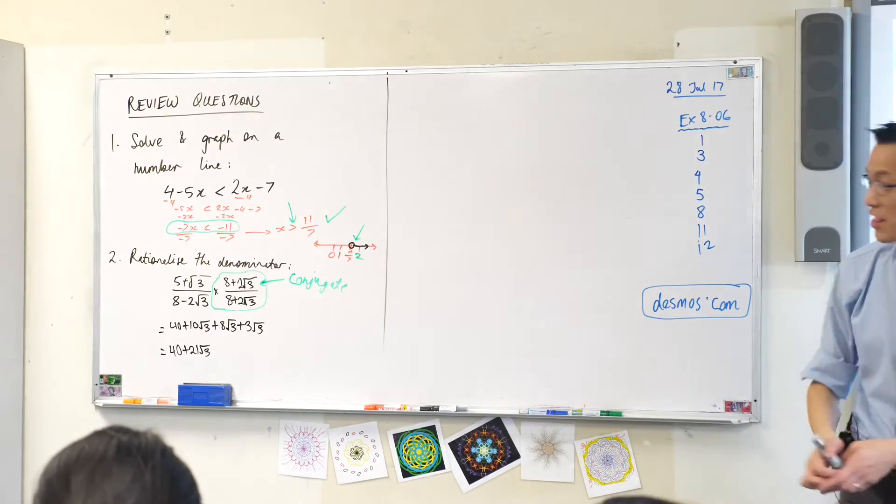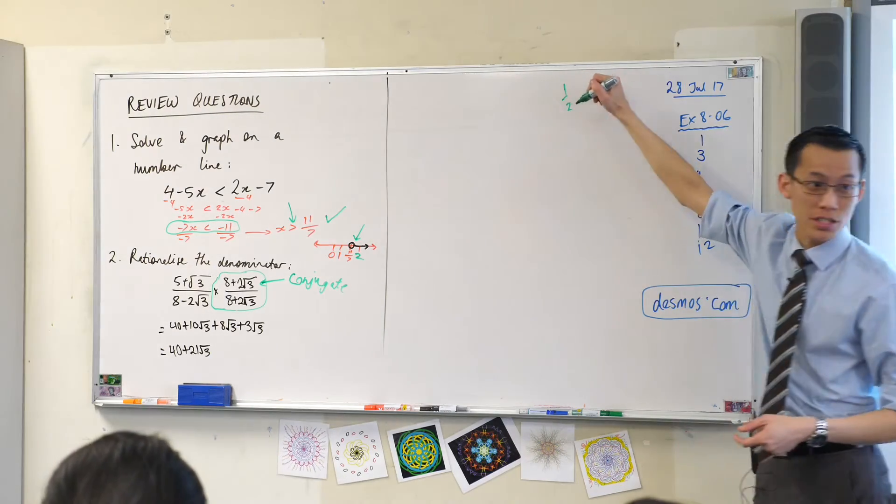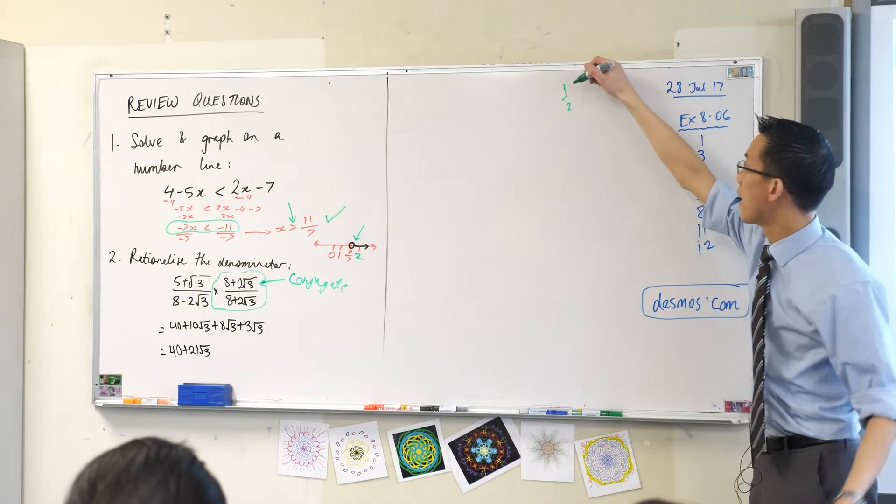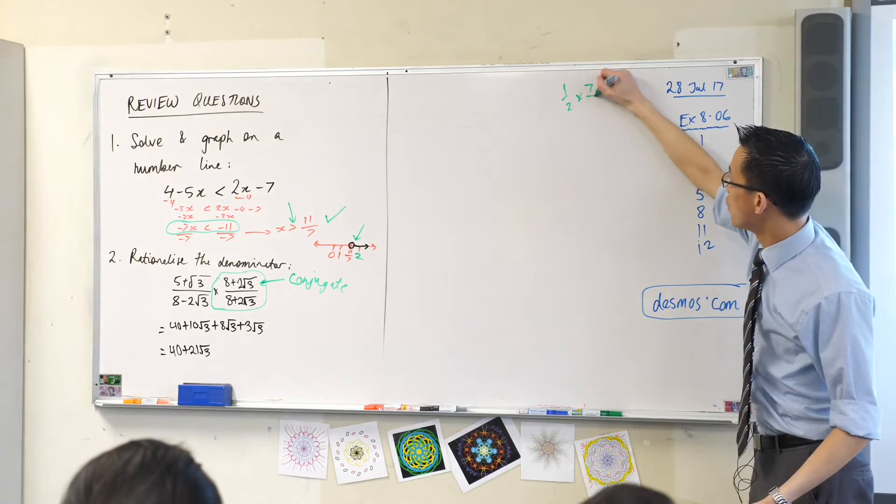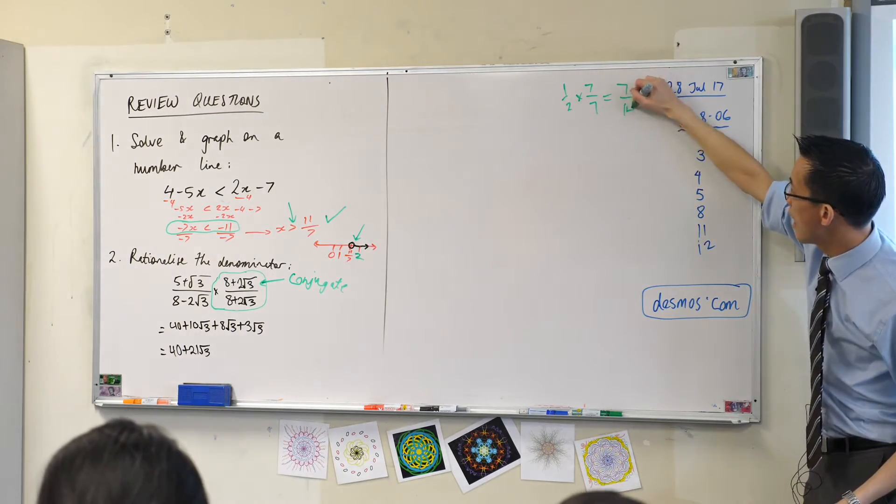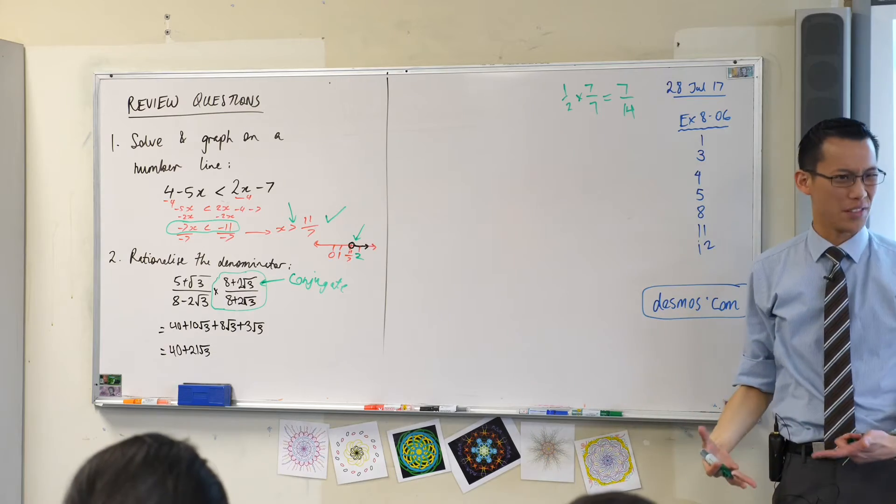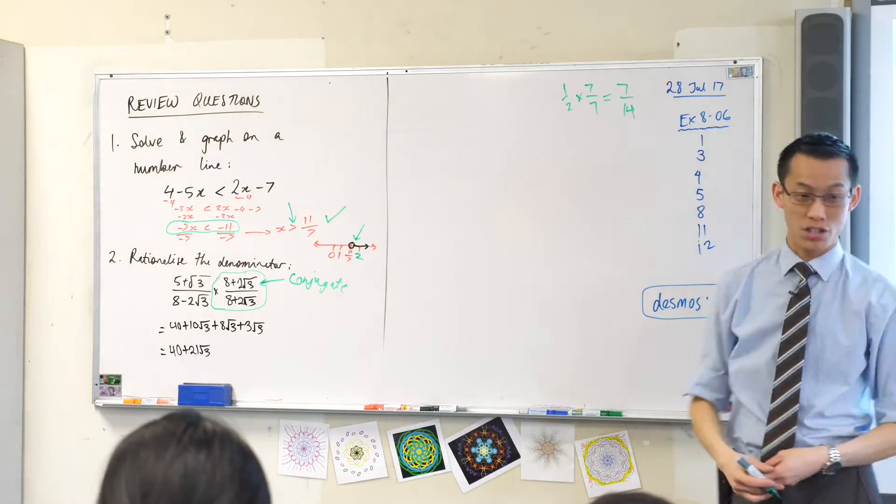Yeah, if you want a fraction to stay the same, if you want a half to stay a half, then if you multiply by a number, you have to do the same to the top and the bottom. Otherwise, it's not a half anymore. It becomes some other number. So she's done the top and the bottom.